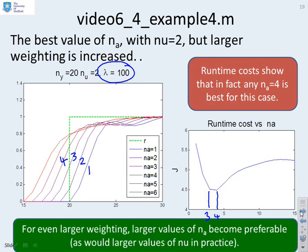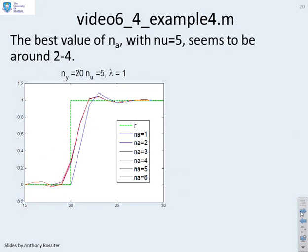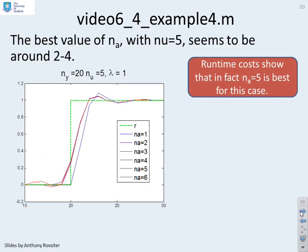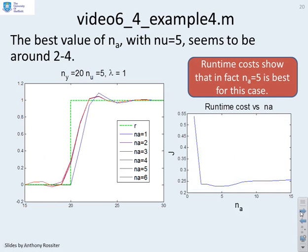And for even larger weighting, you're going to need even larger values of NA. But, again, a reminder that in practice, you might be saying I should be using a larger value of Nu as well. If I use Nu equals 5, then what you find is the best choice is NA equals 5. But you might get away with NA equals 2 in this particular case.